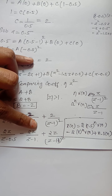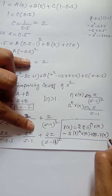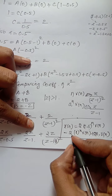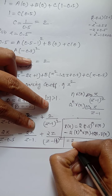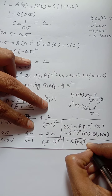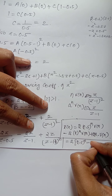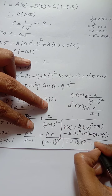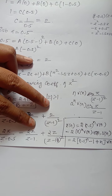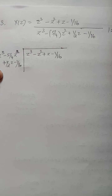So x(n) = 2(0.5)ⁿu(n) − 2u(n) + 2n·u(n), which can be simplified as x(n) = 2(0.5)ⁿu(n) + 2(n − 1)u(n). This is the final answer for the second problem.